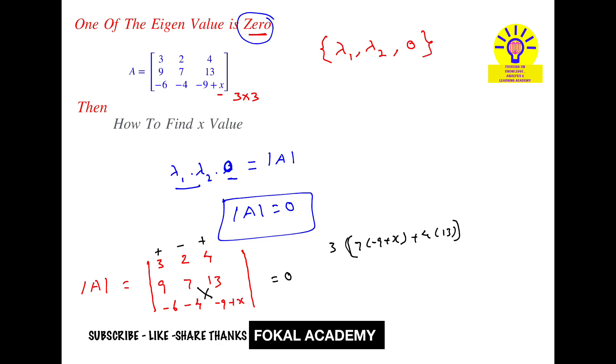Next minus 2, so minus 2 into, so 9 into this term (-9 + x), minus minus minus so minus becomes plus here, so plus 6 into 13, next plus 4 into, so 9 into -4, next minus minus here becomes plus, so plus 6 into 7. This should be equal to 0.